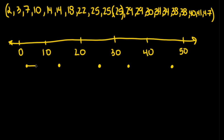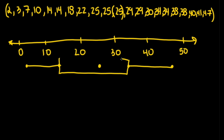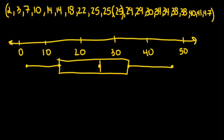Now all that is left is to draw the box and the whiskers. We have a whisker on each end and a box over the three middle numbers. This is what a box and whisker plot looks like for this distribution.